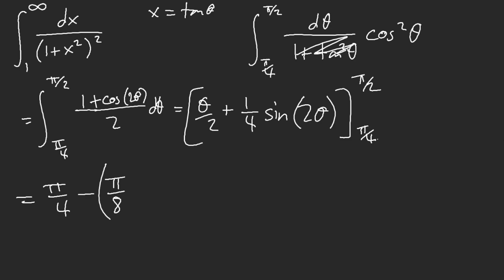I'll keep a minus like that, just to simplify. So pi over 2 is sine pi over 2 is 1, so it's going to give us plus 1 fourth.